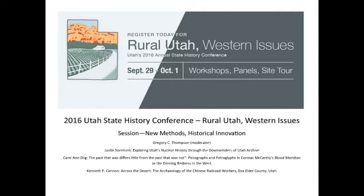Beginning in 1951, the era of nuclear weapons testing was a time of tremendous change at both national and local levels. In the name of national security, a variety of nuclear weapons were tested in a remote area of the Nevada desert known as the Nevada Test Site. Fallout and radiation from these tests affected communities across the nation, in many cases resulting in the loss of property, health, and life. The Downwinders of Utah archive presents an in-depth study of the nuclear detonations, radioactive fallout, and events which have led to devastating results for Utah's Downwinder population.